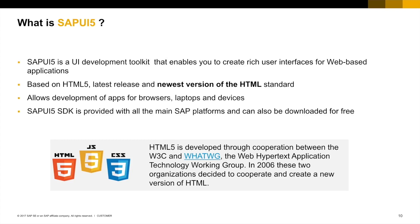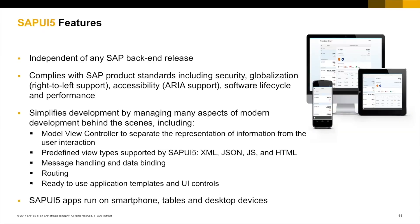HTML5 is a collection of technologies that includes the fifth revision of the HTML markup language for content and structure, CSS3 for look and feel, and a series of JavaScript APIs for behavior. It is developed through cooperation between the W3C and the Web Hypertext Application Technology Working Group. SAPUI5 is independent of any SAP backend release and can run on top of existing SAP systems. It is available on the major SAP-delivered platforms and is therefore available not only for SAP products built on these platforms but also for customer projects.